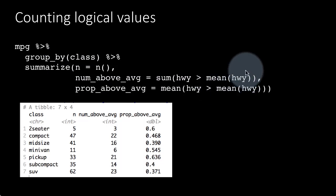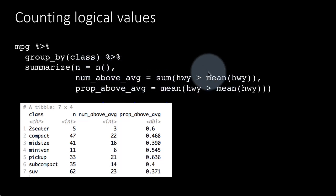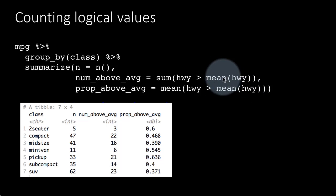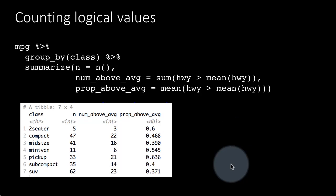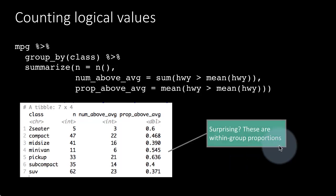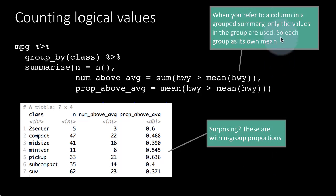What is happening is that when you use mean(hwy) inside summarize after a group_by, it calculates the mean within each group, not the overall mean. So it is telling us that 37.1% of SUVs are above average when the average is calculated within SUVs alone. These are all within-group proportions, not comparisons to the global mean.